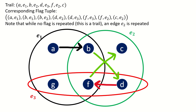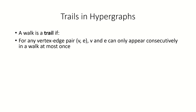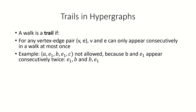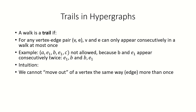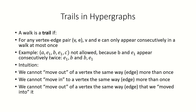So how do we interpret this type of trail in hypergraphs? A trail in a hypergraph means that if a pair of a vertex v and edge e appear in consecutive positions in our walk, that pair cannot appear in consecutive positions again. Intuitively, this means we can't move out of a vertex the same way more than once, we can't move into a vertex the same way more than once, and we can never move out of a vertex the same way we moved into it.